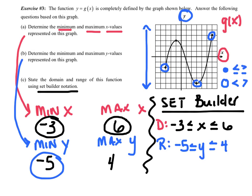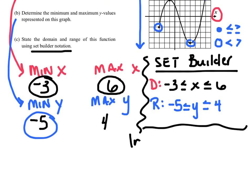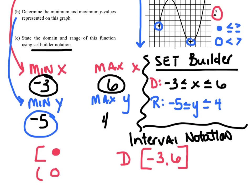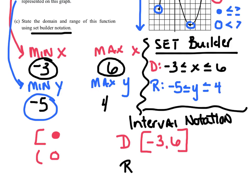Now I'm going to do the same thing using interval notation — our exam will use both, so we need to know the difference. Domain: negative 3 comma 6, and since I had a closed circle at negative 3 and a closed circle at 6, I bracket both: [-3, 6]. My range is my min y comma my max y — closed circles at both, so I bracket those in as well: [-5, 4].